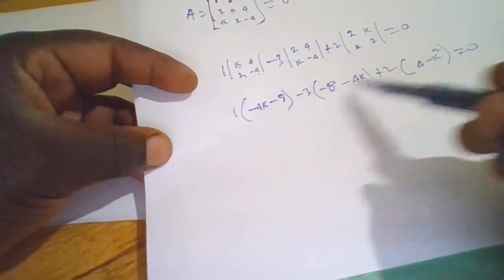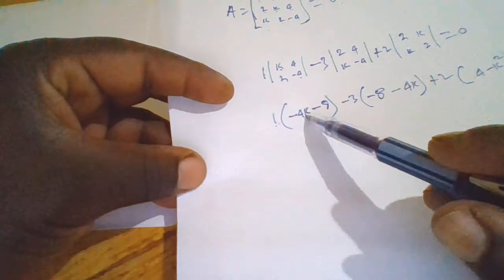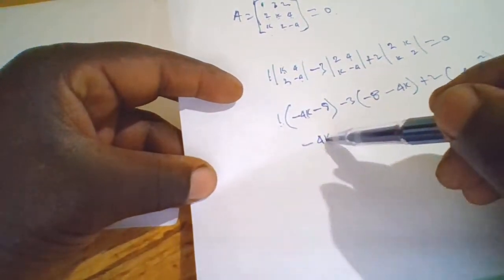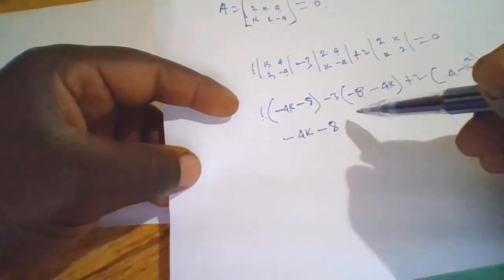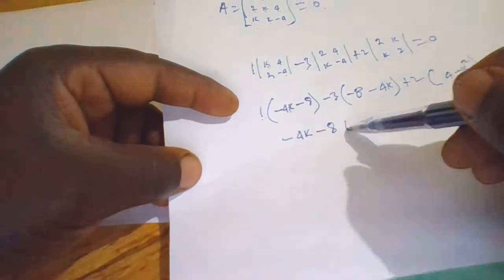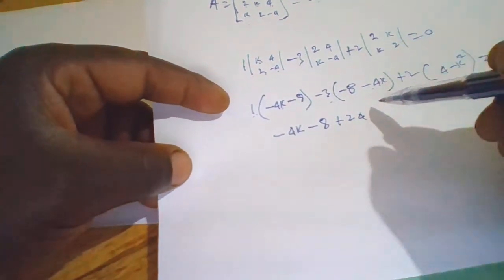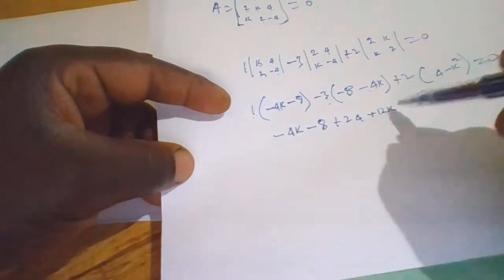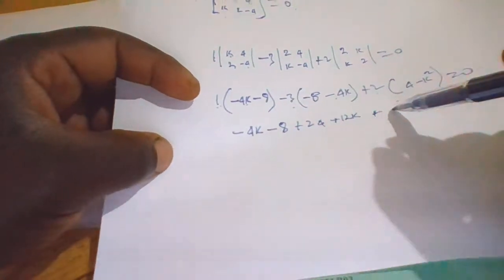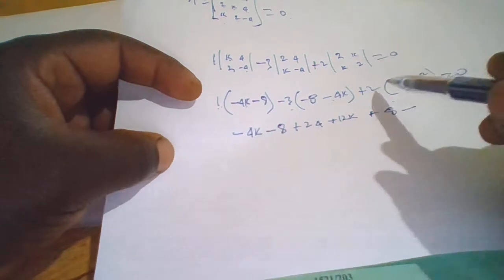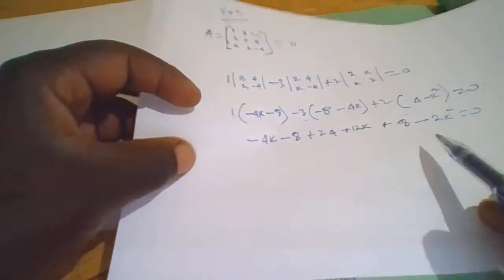Opening the brackets: 1 times negative 4k gives negative 4k; 1 times negative 8 gives negative 8. Then negative 3 times negative 8 gives plus 24; negative 3 times negative 4k gives plus 12k. Then plus 2 times 4 gives plus 8; minus 2 times k² gives minus 2k². This all equals 0.